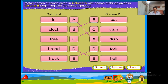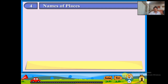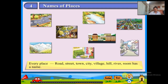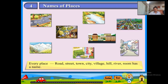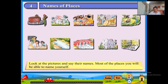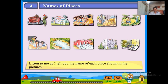Names of Places. Every place — road, street, town, city, village, hill, river, or room — has a name. Look at the pictures and say their names. Most of the places you will be able to name yourself. Listen to me as I tell you the name of each place shown in the pictures.